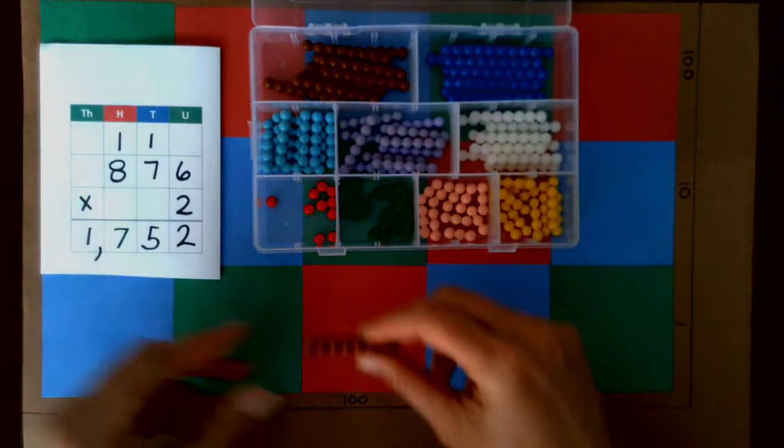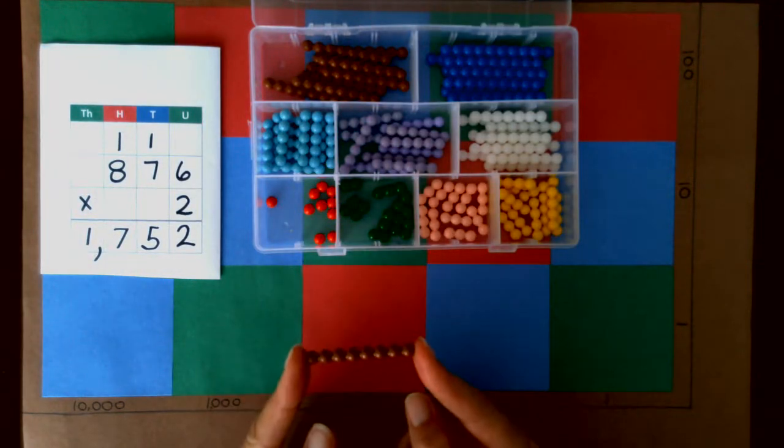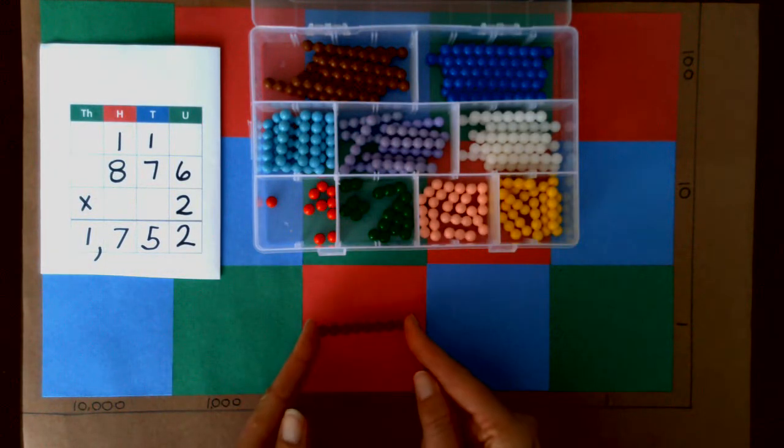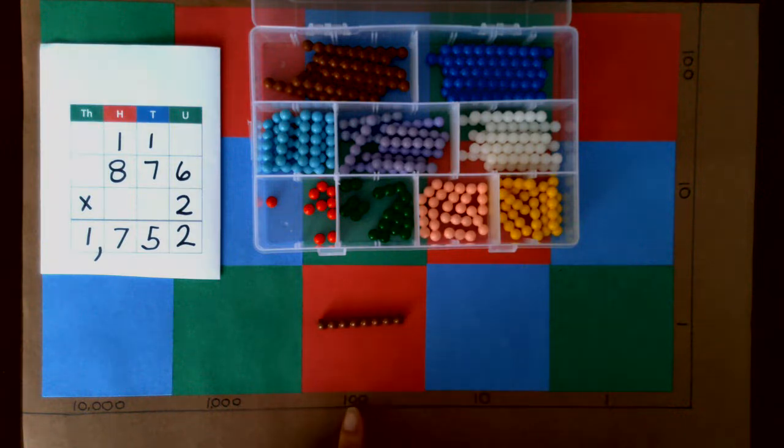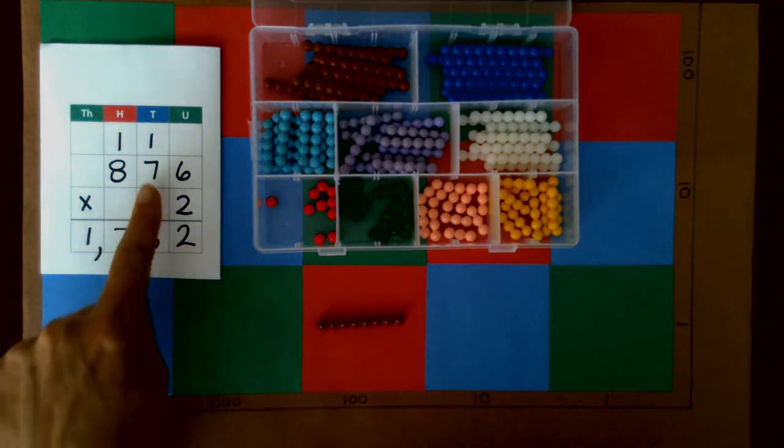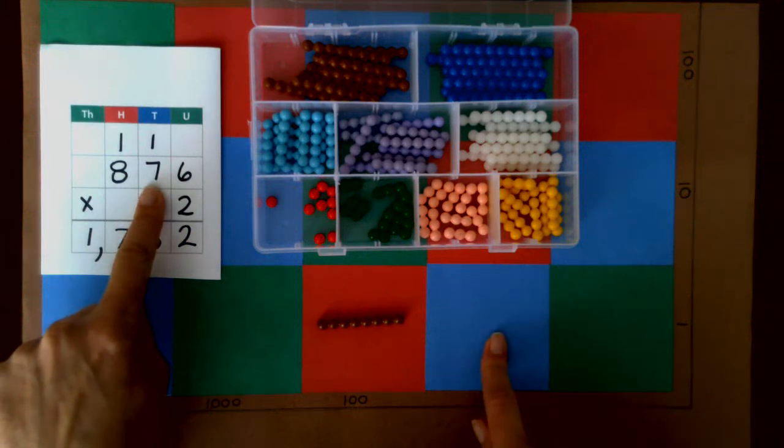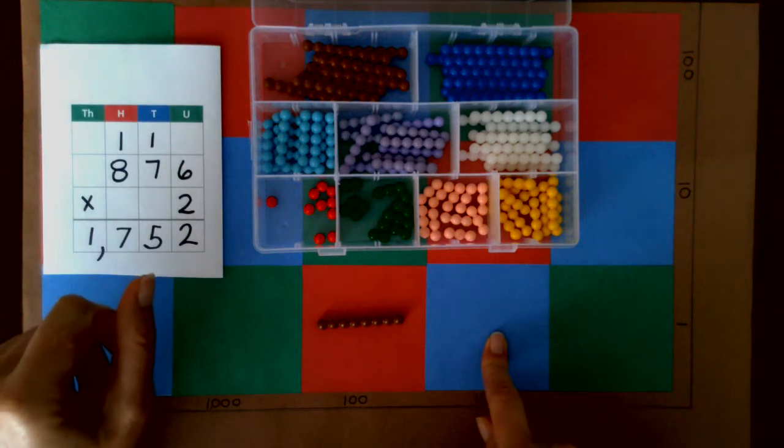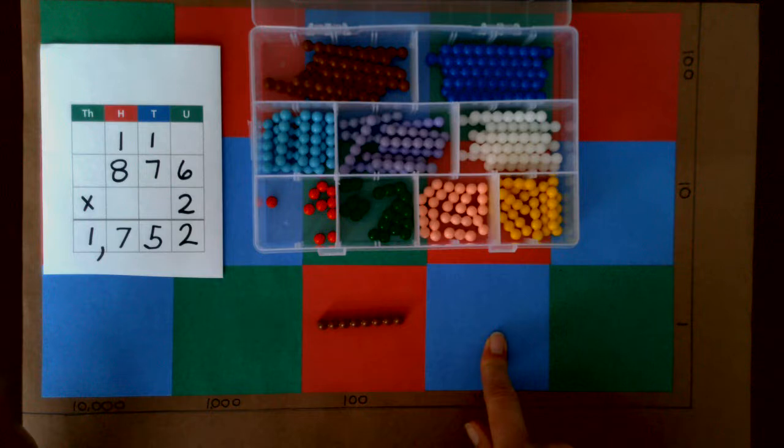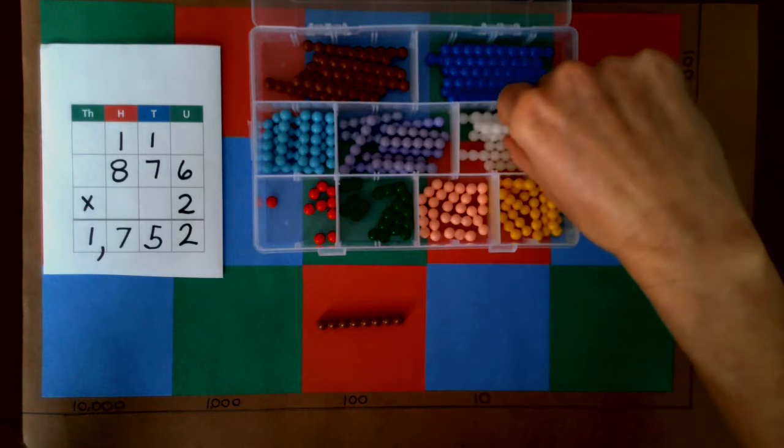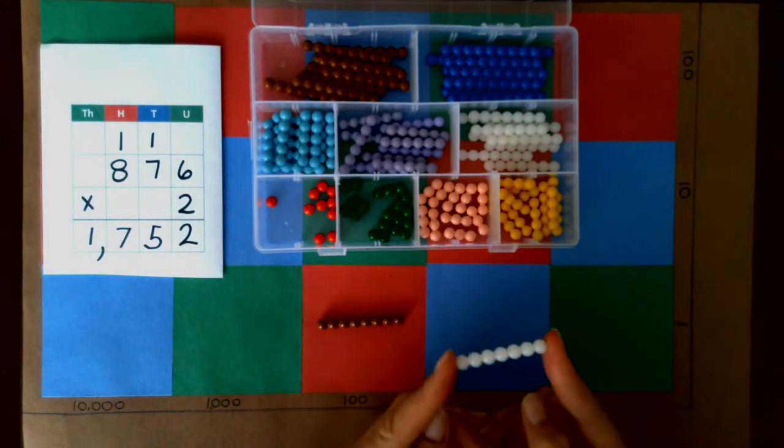Because it's in the hundreds place that symbolizes 800. Instead of taking seven tens of golden beads or base ten blocks, we are going to take the seven bar and it's in the tens place so that represents seven tens.